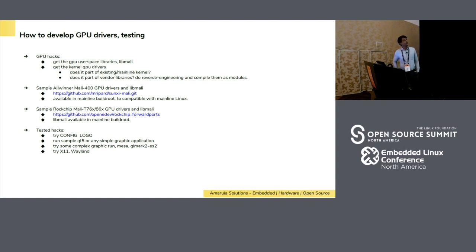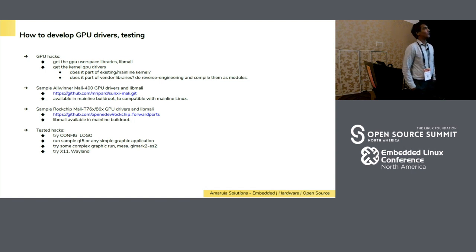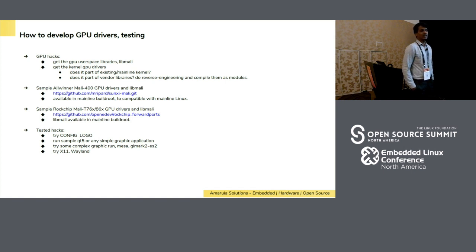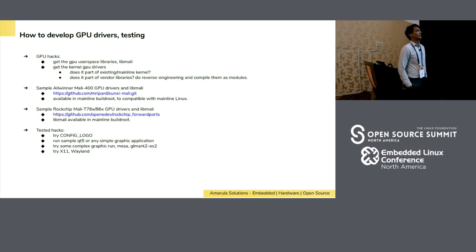Even though we write many drivers for the display engine and panel area, we need to test the GPU. The GPU has two main parts: user space libraries like libmali, and kernel space GPU drivers such as Panfrost and Mali. Identify whether those GPU drivers are part of the Linux kernel. If not, build them as separate modules. The Allwinner Mali 400 is compatible with mainline Linux and available via Buildroot's package manager. The Rockchip Mali on RK3399 does not have mainline Linux compatibility yet, but libraries are available in Buildroot.